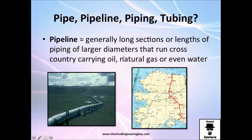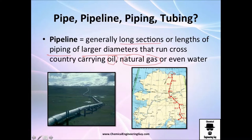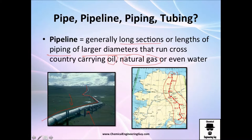A pipeline is more interesting yet — it's about long sections of piping, large diameter commonly, and usually used to move oil or natural gas. For example, the Alaskan pipeline is huge and literally a pipe going through an entire state. Technically it is piping, but the term pipeline speaks more to the length, the task, and of course it's made of many pipes.